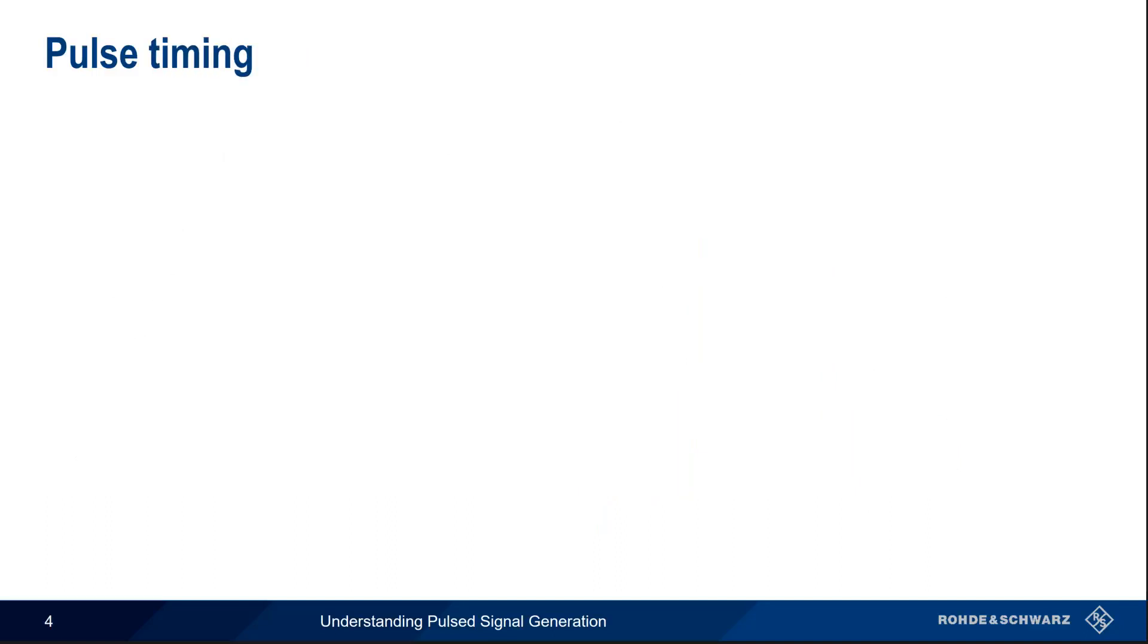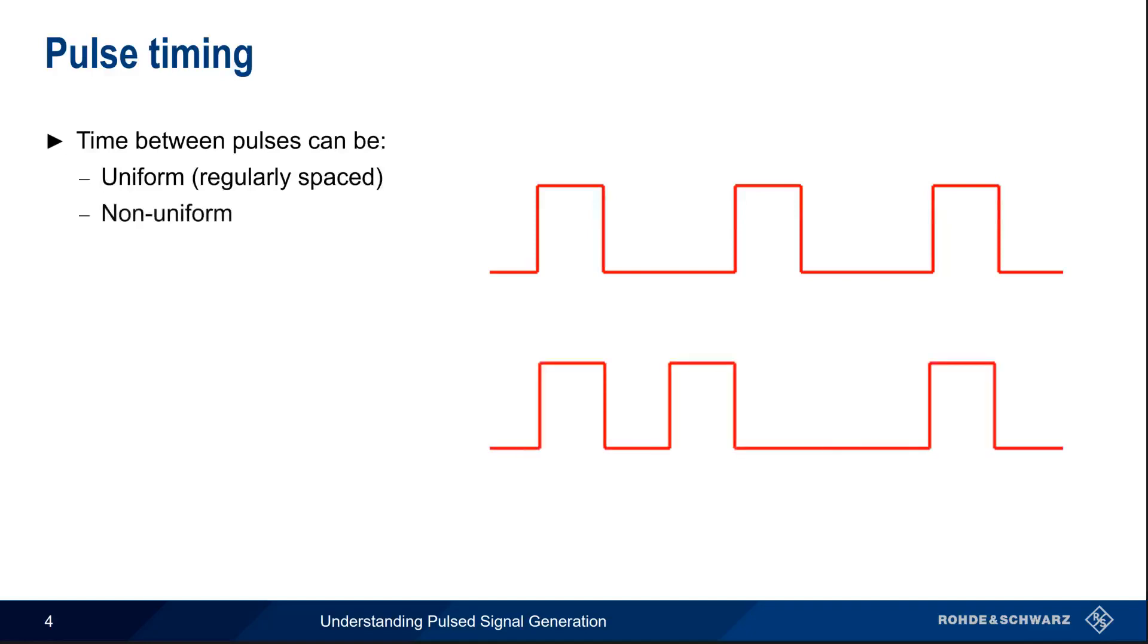In addition to the shape of the pulses, we also need to define the timing between the pulses. The spacing between pulses can be uniform, that is, all the pulses are the same distance apart, or non-uniform, where the spacing between pulses can be different from pulse to pulse.